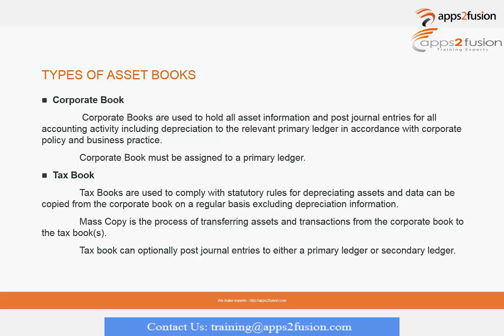There are two types of books available. One is a corporate book. A corporate book holds all the asset information and posts journal entries for all accounting activities, and all this data can easily be copied to a tax book, which is primarily used for tax reporting purposes.